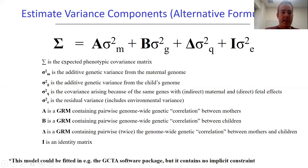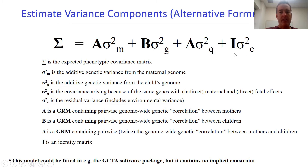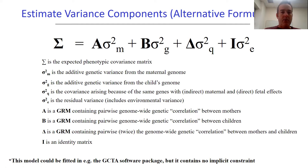This is what the model looked like. Basically, there were four different variance components: a maternal genetic component, an offspring or child genetic component, twice the covariance between the two, and then a residual component. Remember that this is an unconstrained model. The first thing we asked you to do was to run the OpenMX script and get some estimates for those variance components.